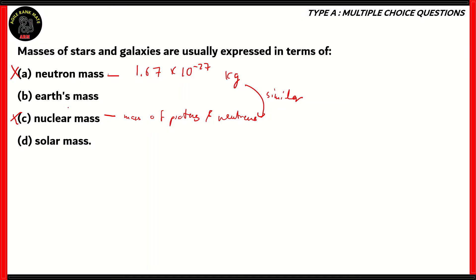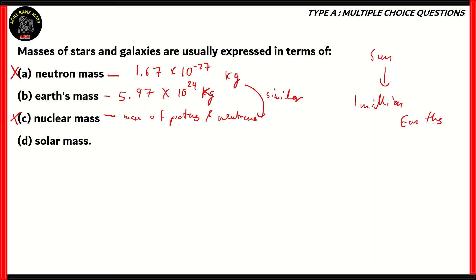What about option B, Earth's mass? We know that Earth is quite heavy. The Earth's mass is estimated to be 5.97 × 10²⁴ kg. That seems pretty reasonable for a star or a galaxy, but the sun has enough volume to contain 1 million Earths. So, technically, the masses of stars and galaxies would still be too big to measure using Earth's mass. Therefore, option B is incorrect.